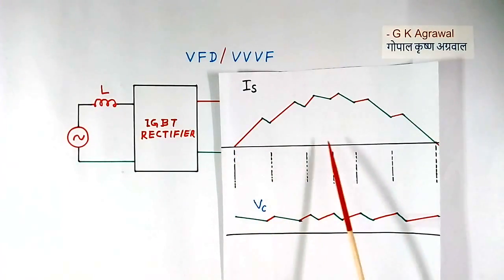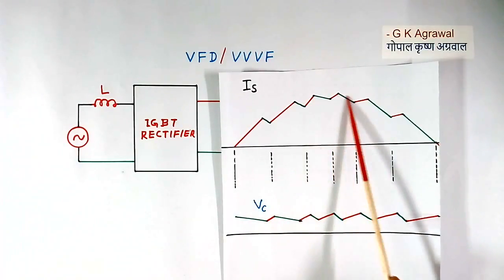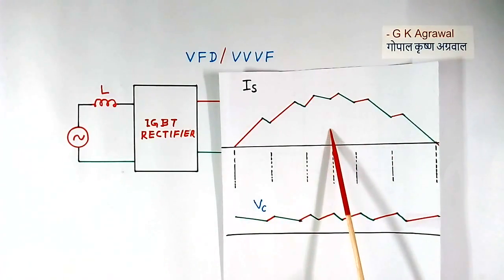If we use thyristor, thyristor will switch once in half cycle. Then current will flow like this. So lot of harmonics will be here.